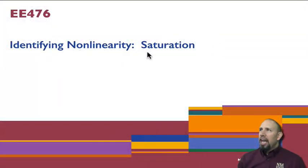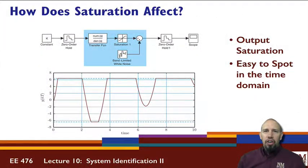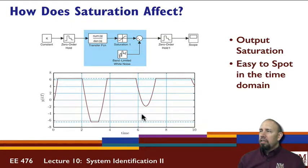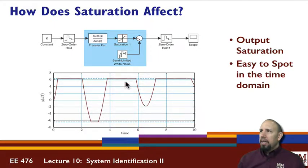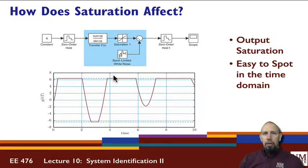Now we talk about non-linearity, and in particular the saturation non-linearity. Saturation basically involves clipping the signal — limiting it to some range, in this case ±6.5. If the signal is larger than 6.5, it stays at 6.5; if less than −6.5, it stays at −6.5. I'm assuming an output saturation here. It's easy to spot in the time domain, but not so easy in the frequency domain. When clipping occurs, the system is no longer following its differential equation, making it a much more complicated problem.